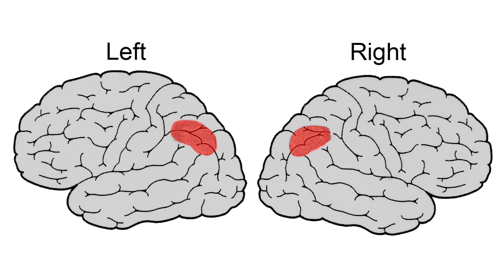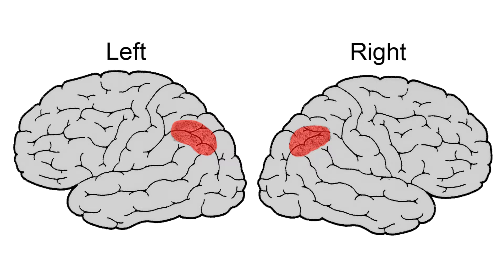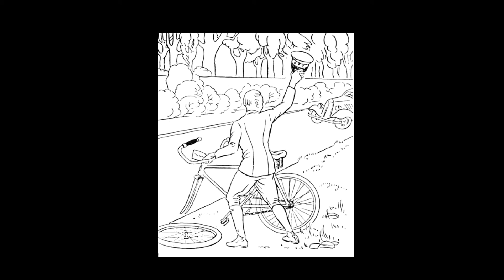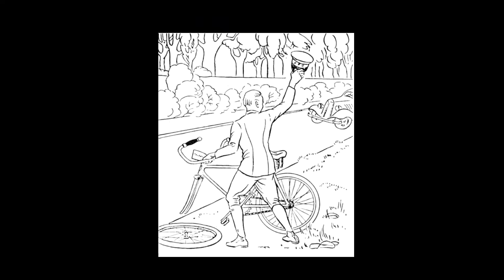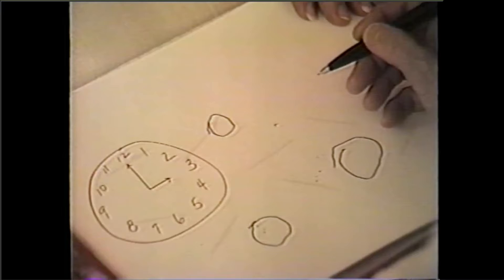Bilateral lesions of the dorsal perceptual stream cause patients to be utterly disoriented in space. They misreach and walk tentatively. They cannot interpret pictures. They cannot decipher the Ishihara color plates, including the control plate, which is not a test of color vision but of spatial vision. They have difficulty reading and telling time from an analog display because visual space looks jumbled.